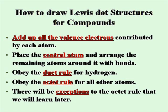Hydrogen can never be the central atom. Once you've placed the central atom, obey the duet rule for hydrogen by putting a pair of electrons, and then obey the octet rule for all other atoms by putting four pairs, or eight total electrons. There will be some exceptions to these rules later, but we'll learn those as we go along.